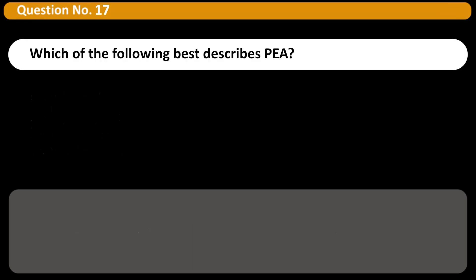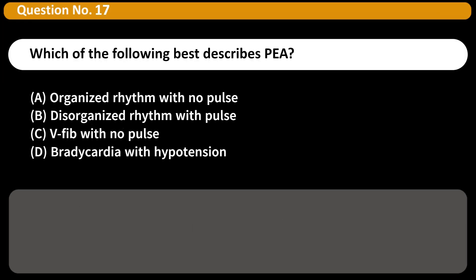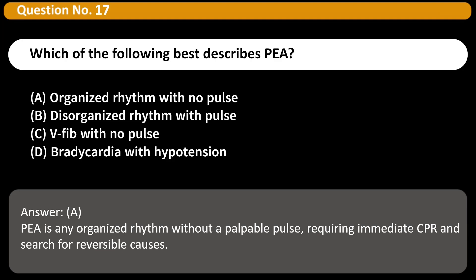Which of the following best describes PEA? A. Organized rhythm with no pulse. B. Disorganized rhythm with pulse. C. V-fib with no pulse. D. Bradycardia with hypotension. Answer: A. PEA is any organized rhythm without a palpable pulse, requiring immediate CPR and search for reversible causes.